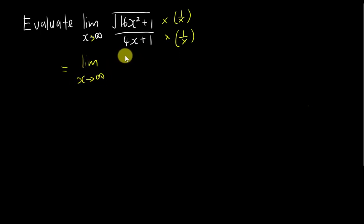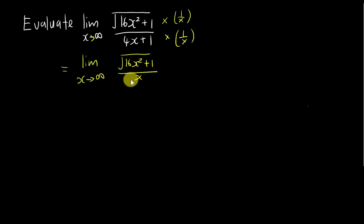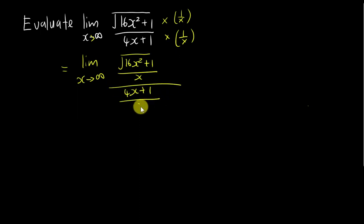So I will copy: limit x approaches infinity. When I divide by 1 over x, this is what happens: square root of (16x² + 1) over x, divided by (4x + 1) over x.